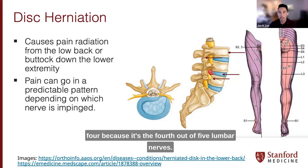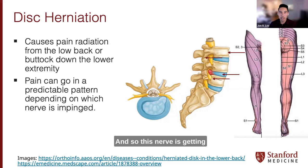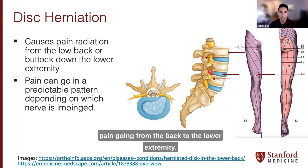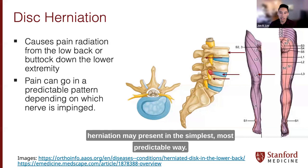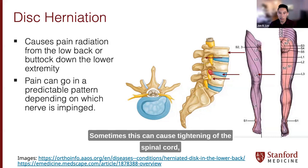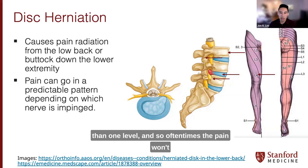This nerve is the right L4 nerve — 'L' for lumbar spine and '4' because it's the fourth out of five lumbar nerves. This nerve is getting irritated by the bulging disc, and typically this pain will present as pain going from the back to the lower extremity. The L4 dermatome demarcates the area of typical pain for L4. However, not everyone will have symptoms explained by a single pinched nerve — bony arthritis, thickened ligaments, fatty deposits in the epidural region can all complicate things.